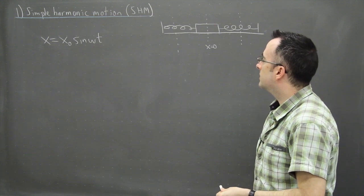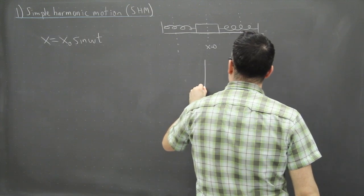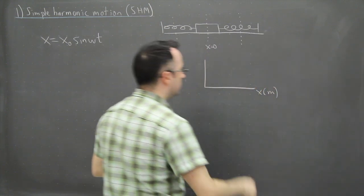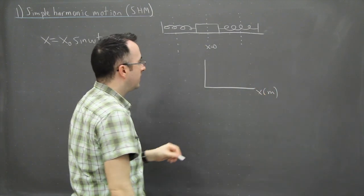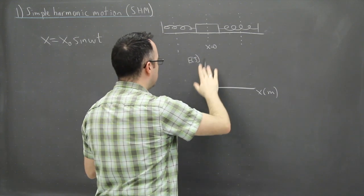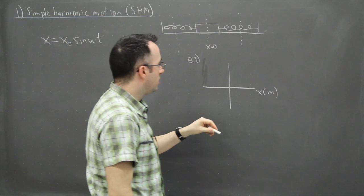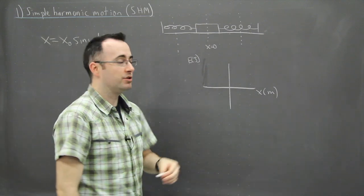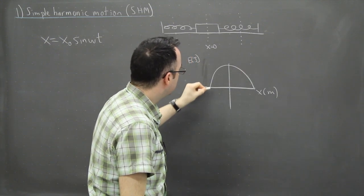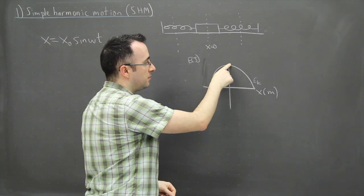It might also be interesting to look at the energy of this, just to remind you about how that graph looks. If I graph position x on one axis and energy in joules on the other, the kinetic energy will look something like this curve. So that will be EK. What that means is that at x equals zero, there is a maximum kinetic energy.